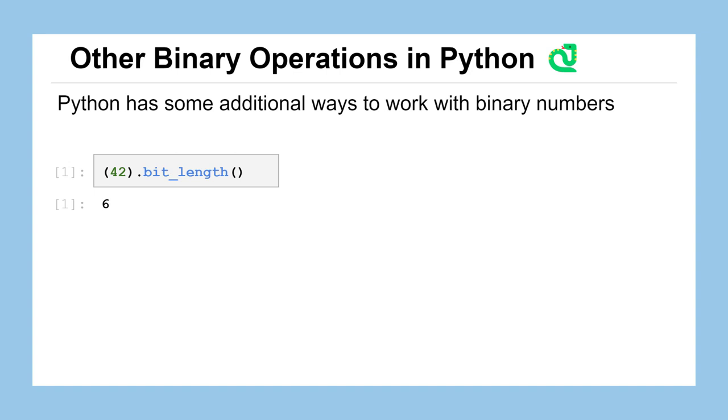The way Python is set up is that if you have an integer followed by a dot directly, it'll assume that you're actually trying to make a float with the integer component and the decimal component. But by using the parentheses, Python will know you want to use this dot bit length function on the number inside the parentheses. First time we've really seen that syntax before.